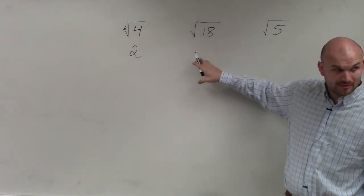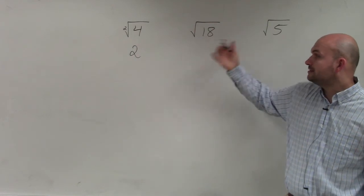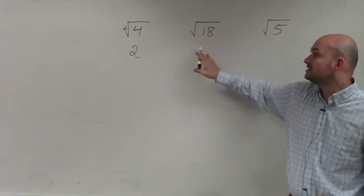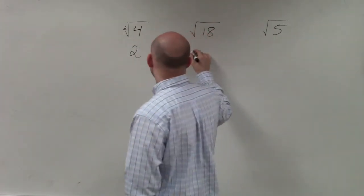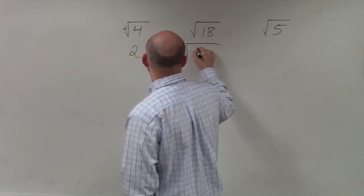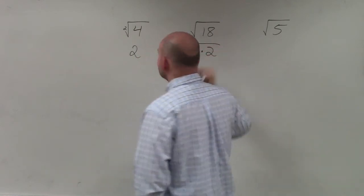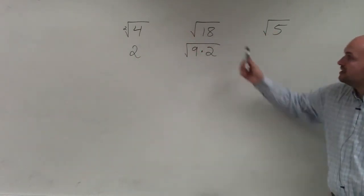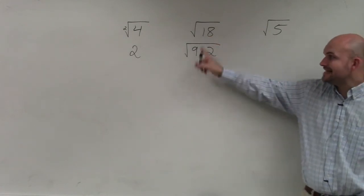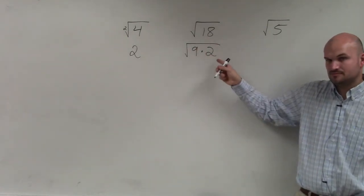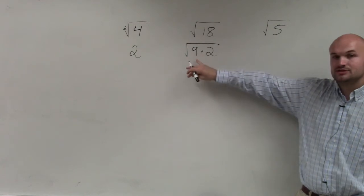The other way is to break it down by a product of a square number and a non-square number. If you see here, 18 is the same thing as 9 times 2, yes. Can you take the square root of 9? Yes.